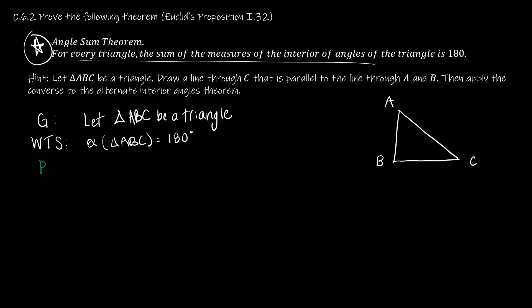The next part is the proof itself. When constructing a proof, I should have a reason for every single thing that I do. The reasons I can use have to be definitions, theorems that we already know, or other mathematical constructs — like knowing we can subtract the same thing from each side of an equation, or substitute equal things. When I say theorems we already know, I mean ones covered in this textbook. I encourage you not to just Google how to prove something, because they might use a theorem we haven't covered.